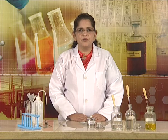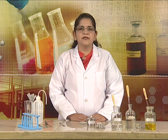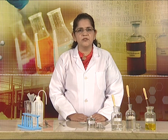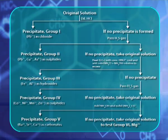Please note, today we have performed the test for lead ions in a known salt. But if an unknown salt is to be analyzed for the presence of cation, then we will follow the scheme of qualitative analysis and do the test for group zero first. In case it is absent, then we will perform the test for group 1 cation as shown today.